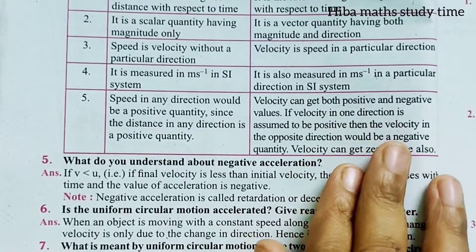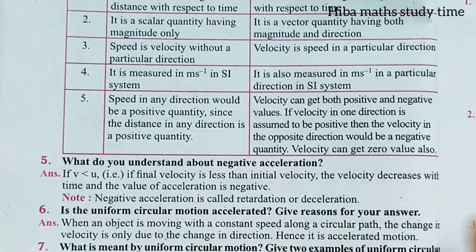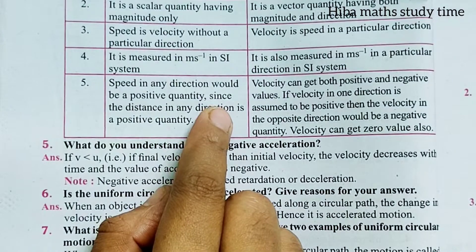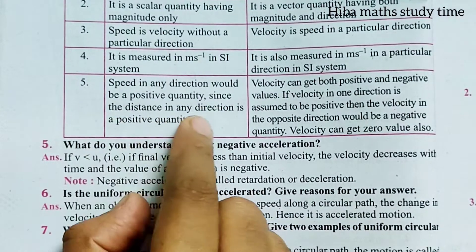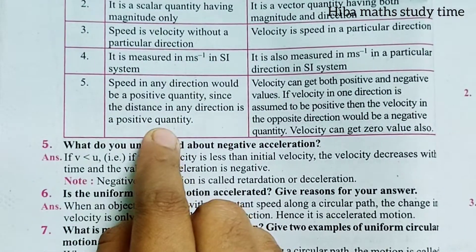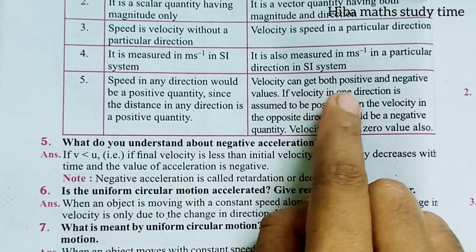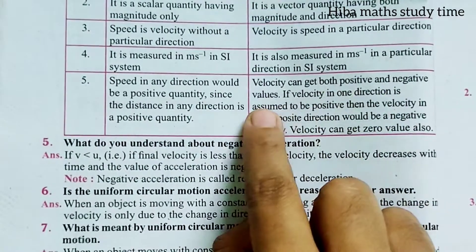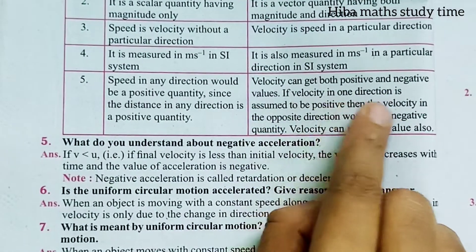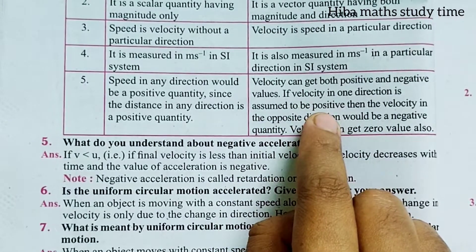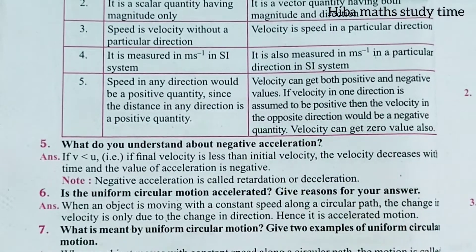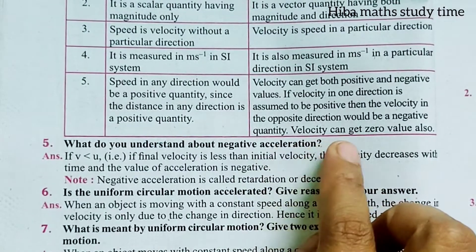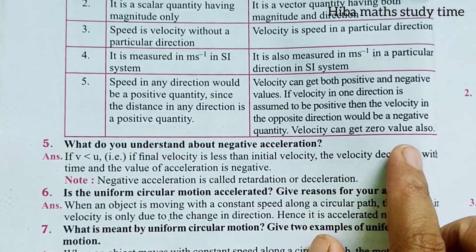Speed is velocity without a particular direction; velocity is speed in a particular direction. Both are measured in meters per second in the SI system. Speed is always a positive quantity since distance in any direction is positive. Velocity can be both positive and negative: if velocity in one direction is positive, velocity in the opposite direction is negative.